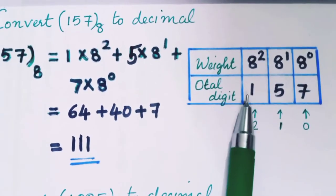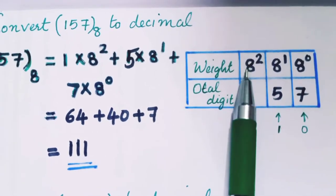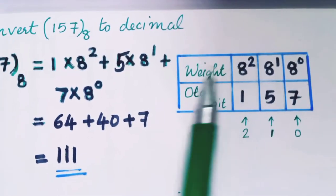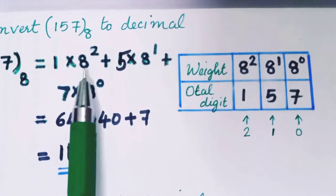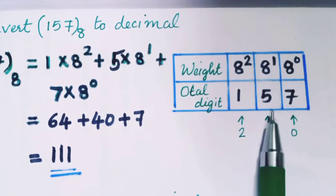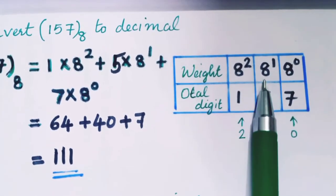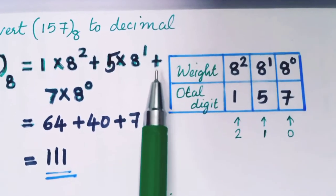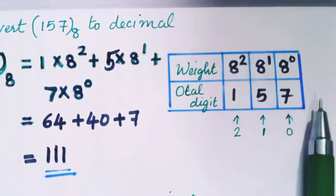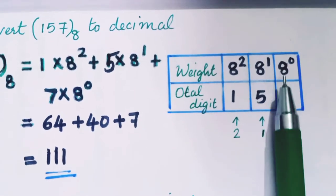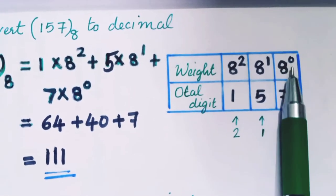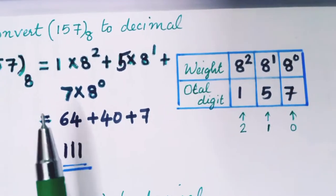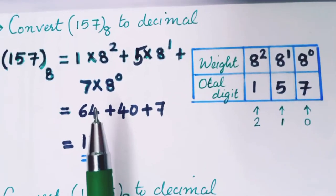The octal digit 1 multiplied by 8 raise to 2, plus octal digit 5 multiplied by 8 raise to 1, plus the last digit 7 multiplied by 8 raise to 0. So we calculate: 1 × 8² + 5 × 8¹ + 7 × 8⁰.